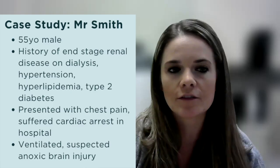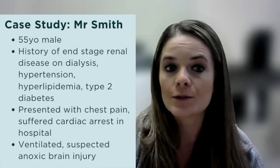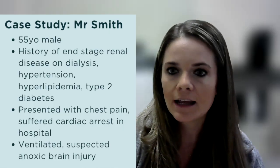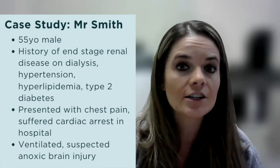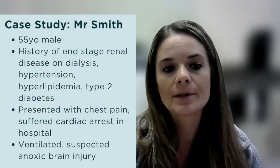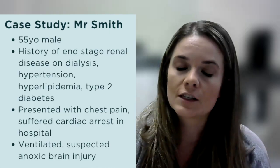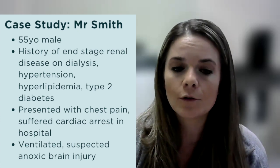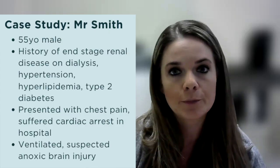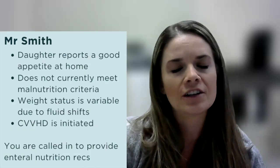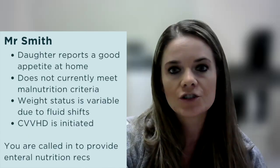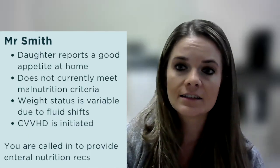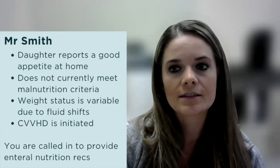Now let's review a case study that pulls all of these concepts together. Mr. Smith is a 55-year-old male with a past medical history of end-stage renal disease on dialysis, hypertension, hyperlipidemia, and type 2 diabetes. He presents with chest pain, has a cardiac arrest, is intubated in the emergency room, and has presumably suffered an anoxic brain injury. His daughter reports he normally has a good appetite and eats two to three meals per day. He does not currently meet malnutrition criteria. CVVHD is initiated during the ICU admission, and the ICU team requests tube feeding recommendations.